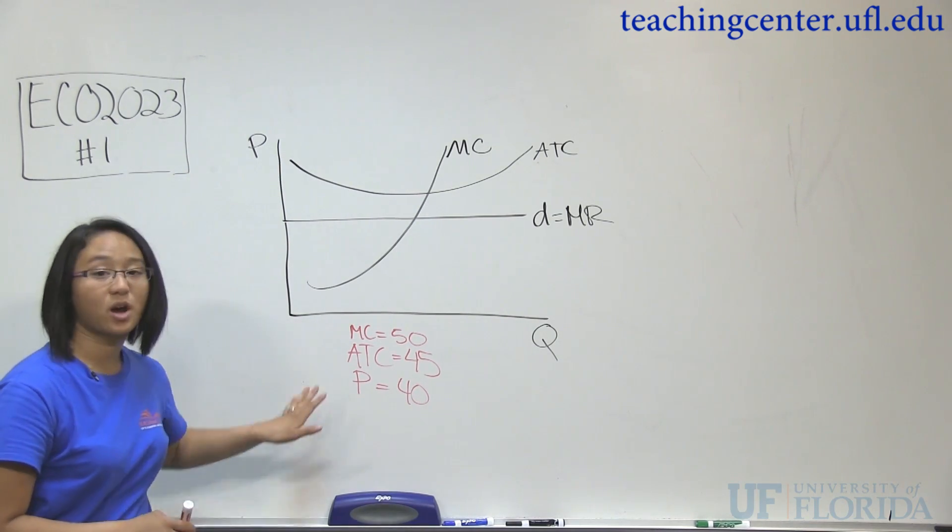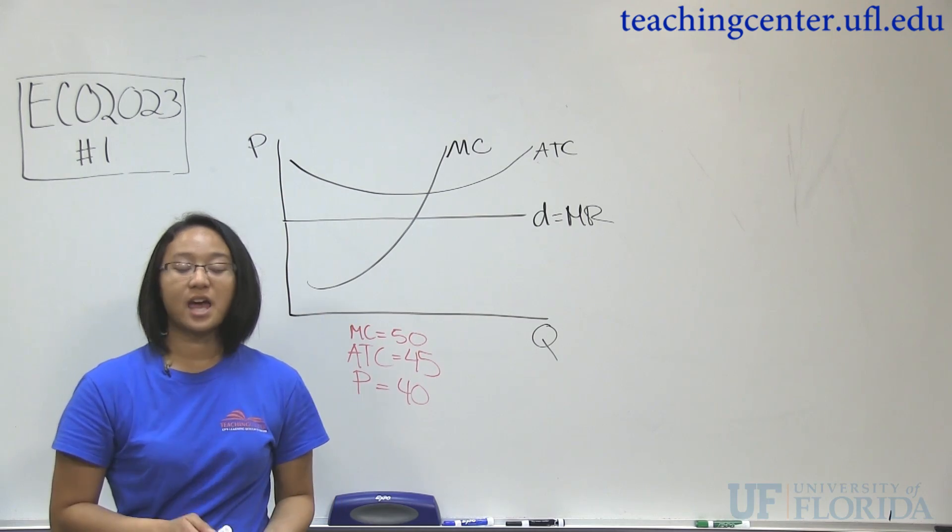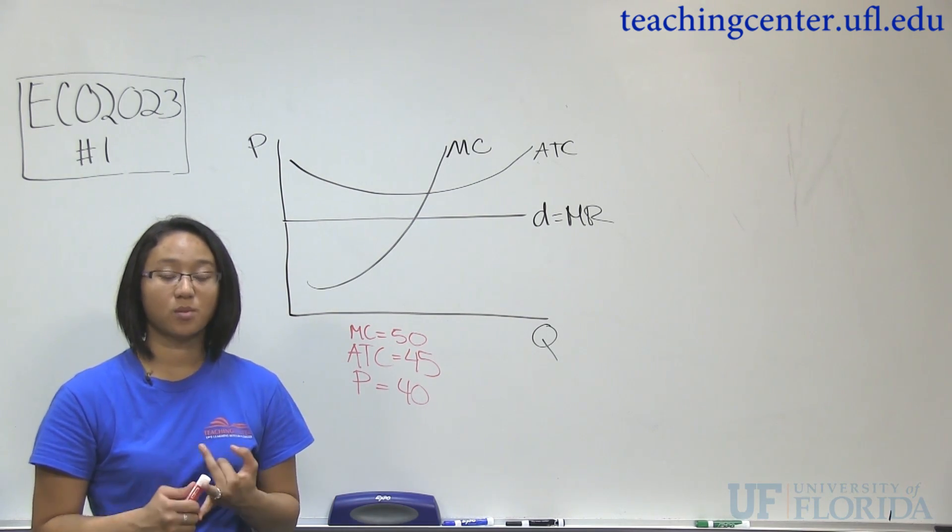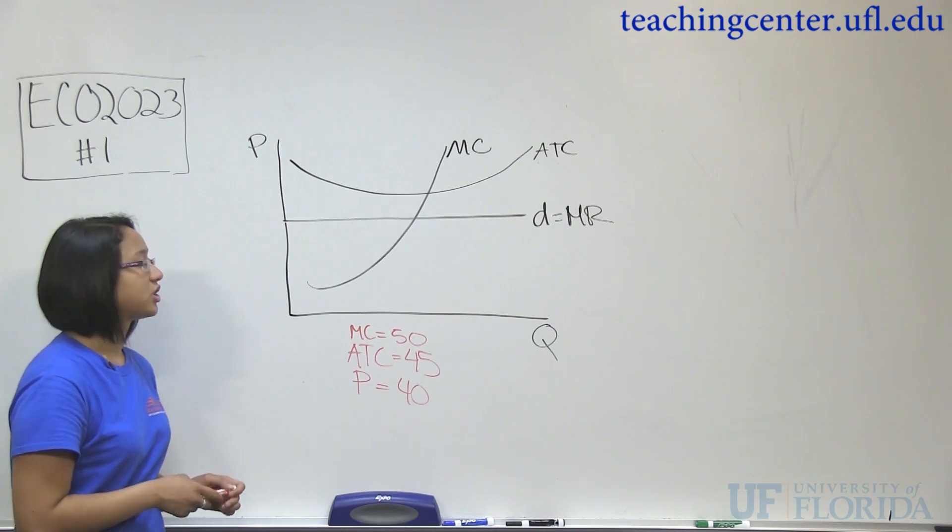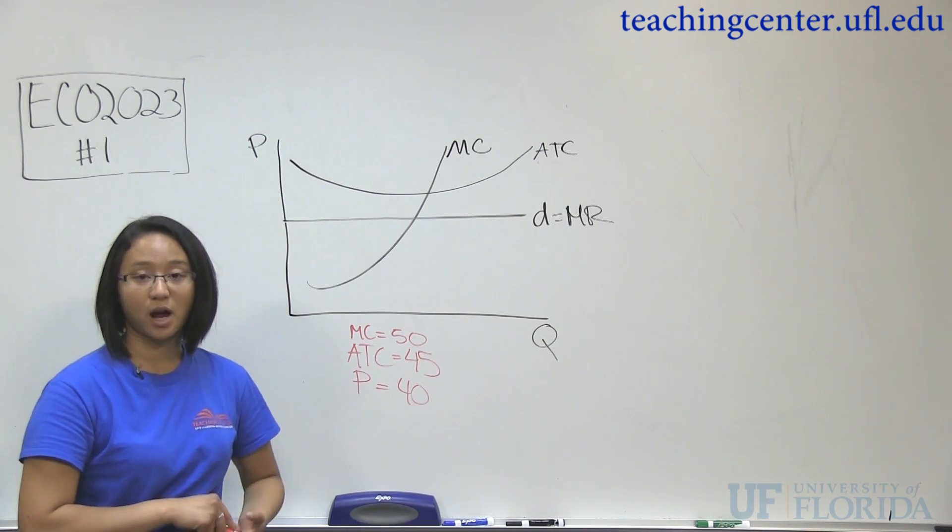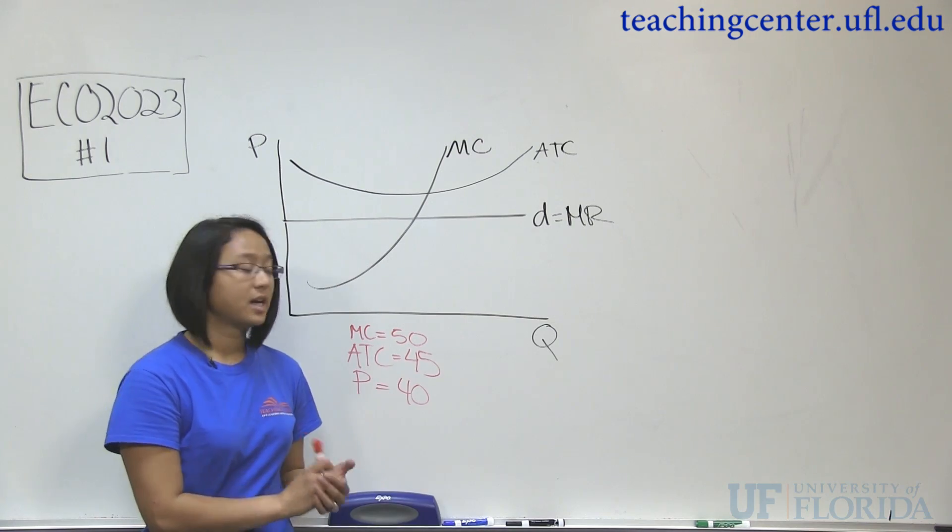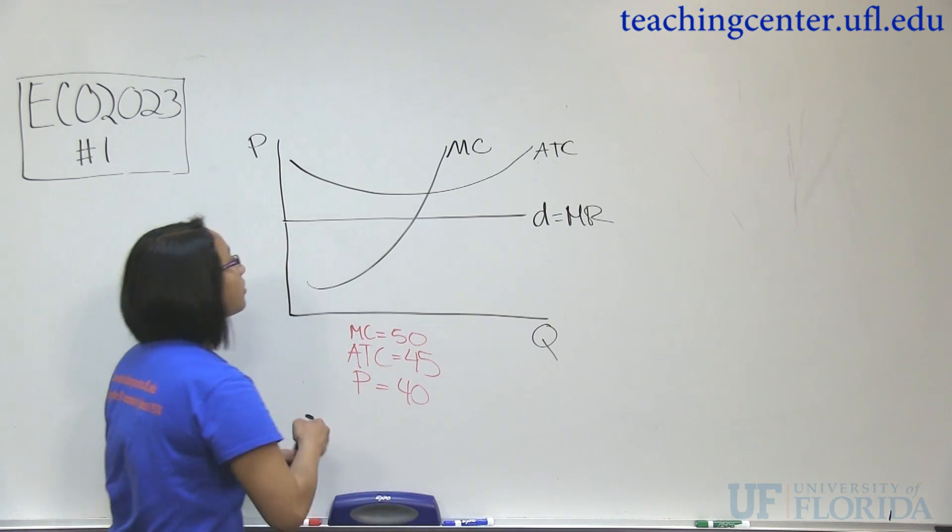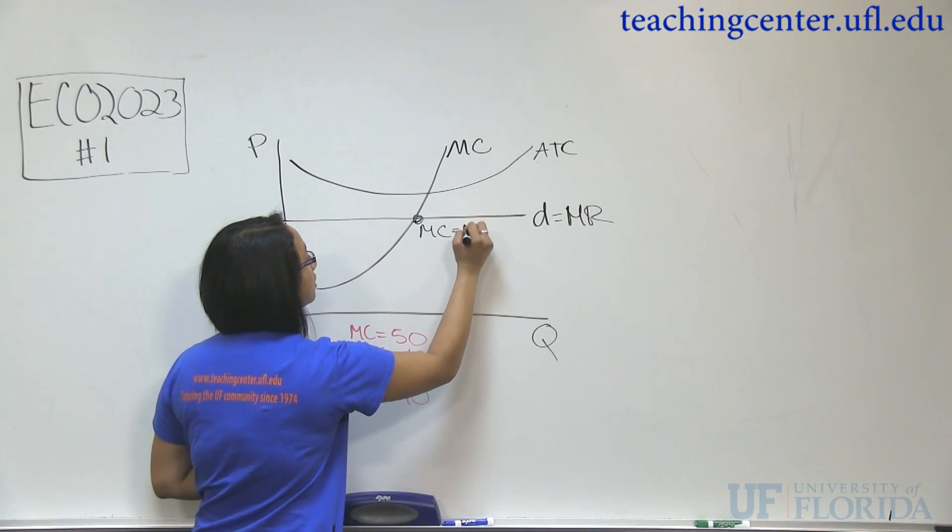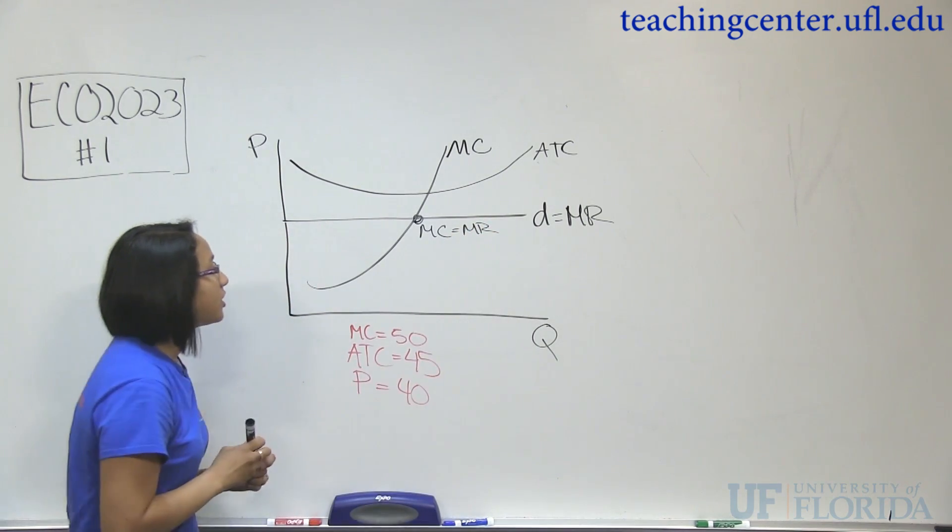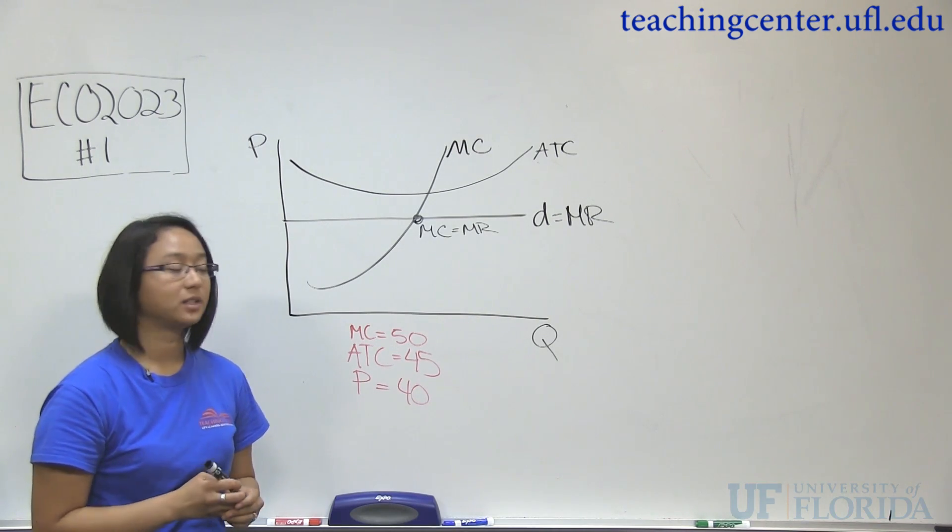So this is what we're given, and the question is asking us two things. Is Jane maximizing her profit, and is she incurring a loss, normal profit, or an economic profit? So to answer the first question, are you maximizing your profit? You have to figure out if she's producing at the best point. And where is that best point? It's where marginal cost is equal to marginal revenue. So we need to find out if these two things are equal to determine if she's maximizing her profit.